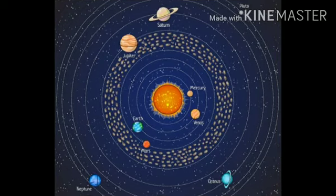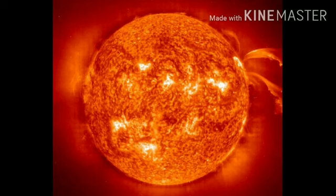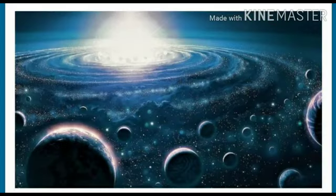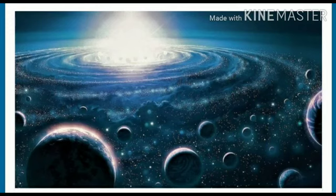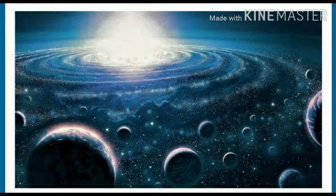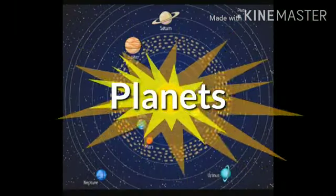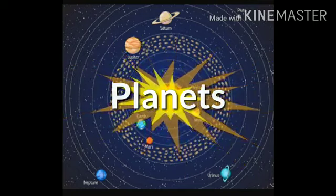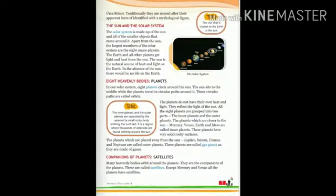The Earth and all the other planets get light and heat from the sun. The sun is the star at the center of the solar system. Sun is the source of heat and light on the Earth.